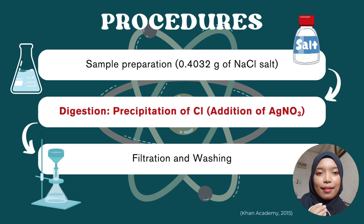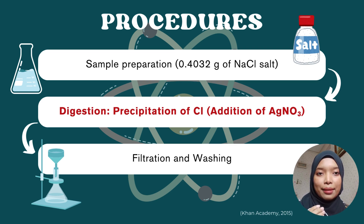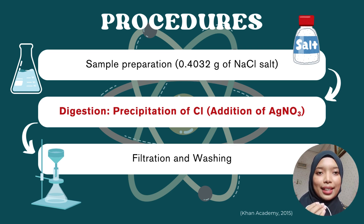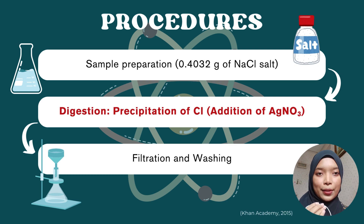The first 3 to 5 ml addition caused the solution to turn cloudy, and eventually after 39.10 ml of silver nitrate, the solution had completely precipitated. While adding the silver nitrate, the solution was also heated and stirred with a glass rod to increase the rate of reaction.